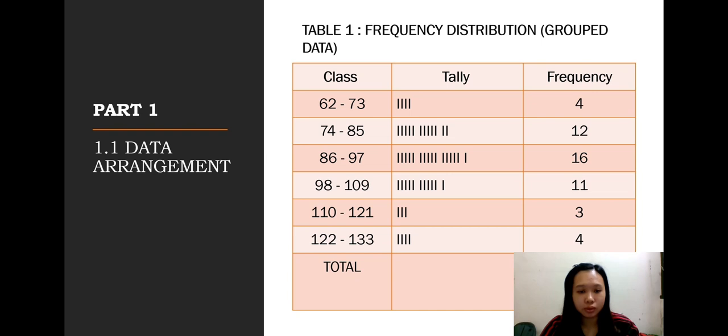Table 1 is the frequency distribution table grouped data. In this table, we have three columns: class, tally, and frequency. In class, we get 6 classes. In tally, we make a tally mark and make sure the number is right. Lastly, in total frequency must be 50.